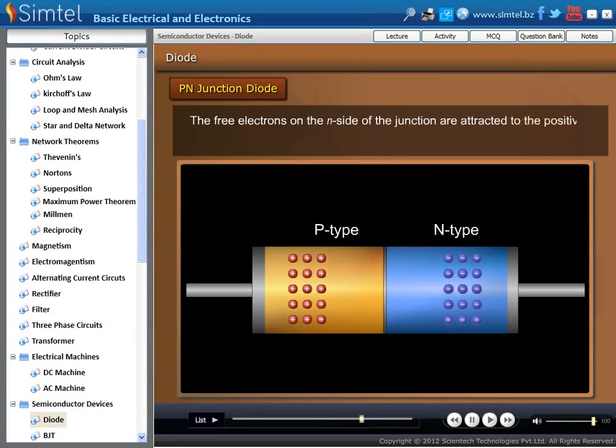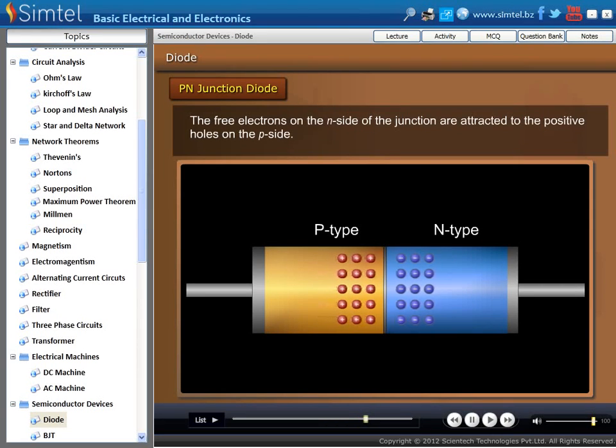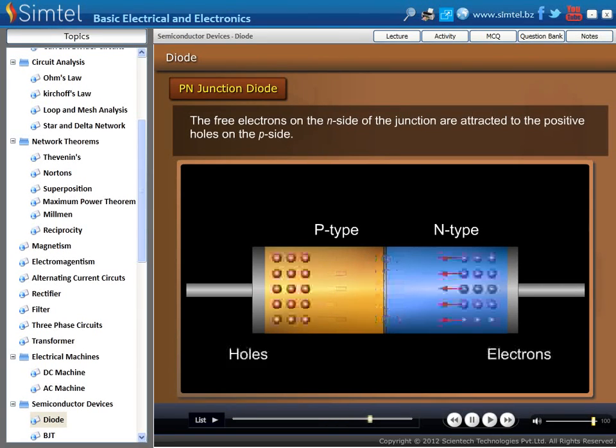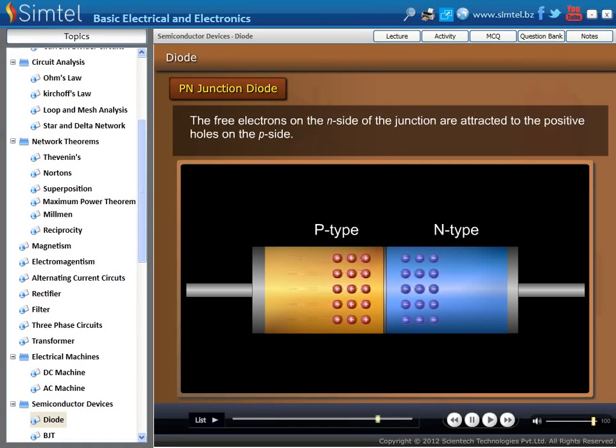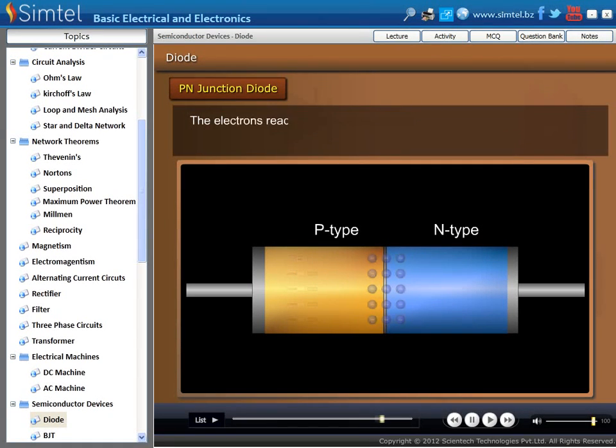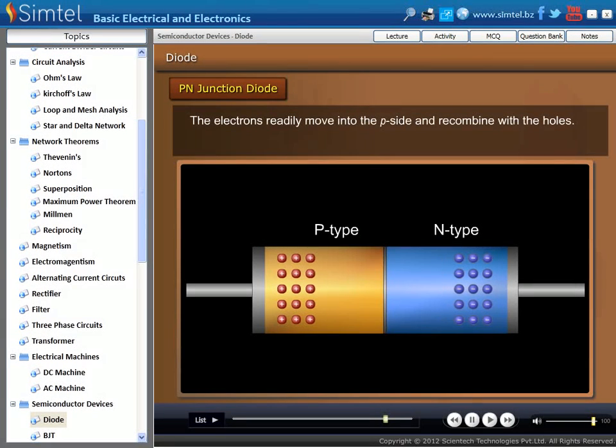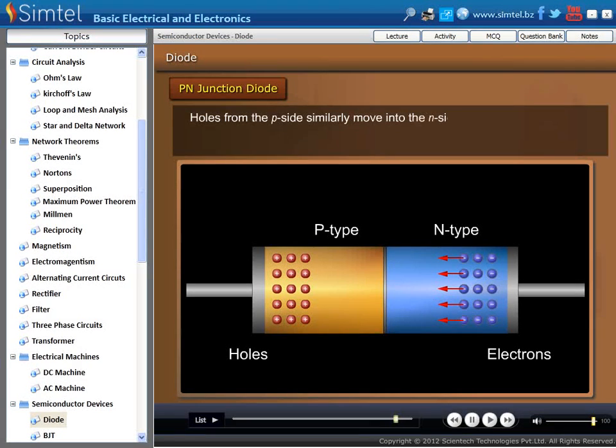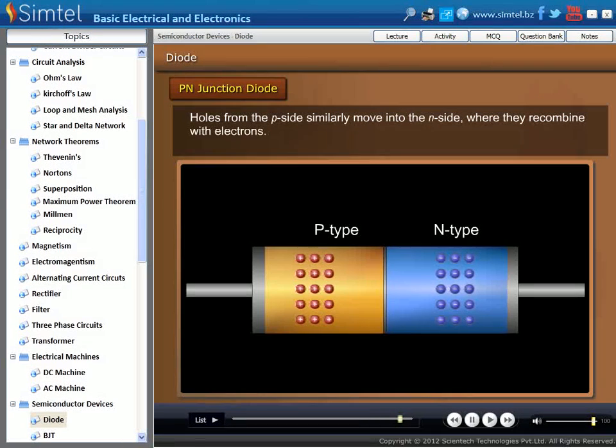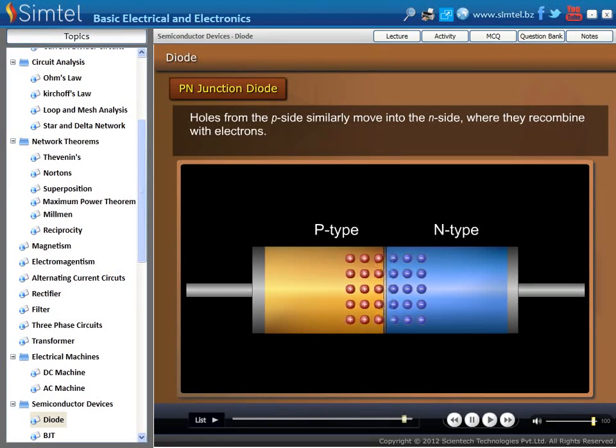As we see in an animation, the free electrons on the N-side of the junction are attracted to the positive holes on the P-side. The electrons readily move into the P-side and recombine with the holes. Holes from the P-side similarly move into the N-side, where they recombine with electrons.